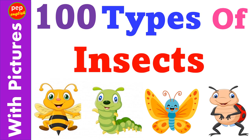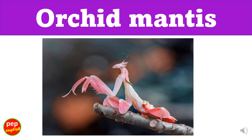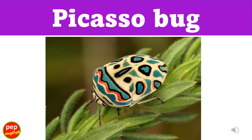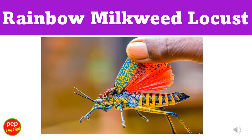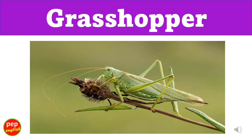100 Types of Insects. Orchid Mantis. Picasso Bug. Rainbow Milkweed Locust. Grasshopper.